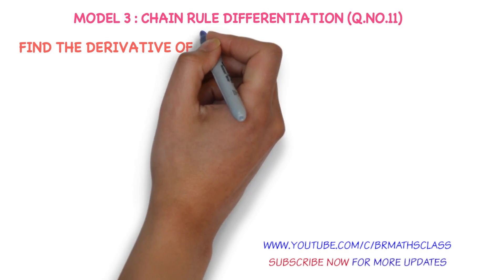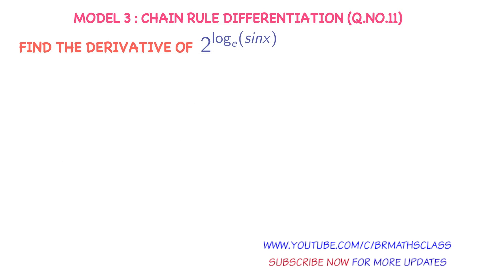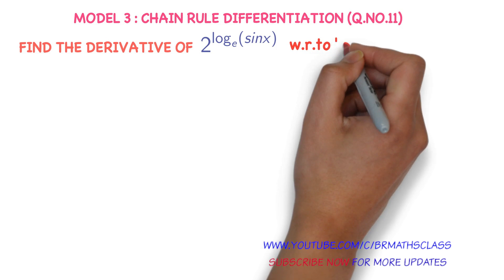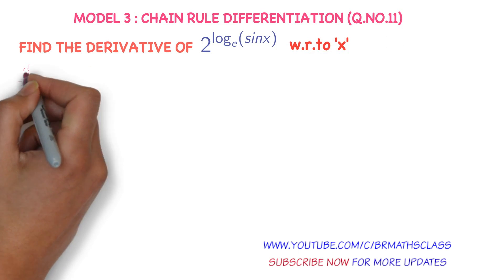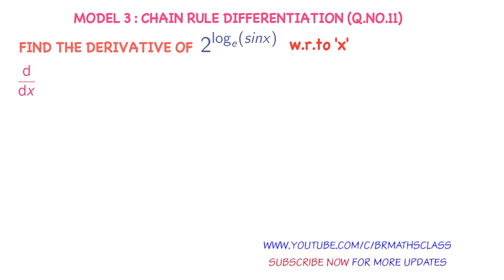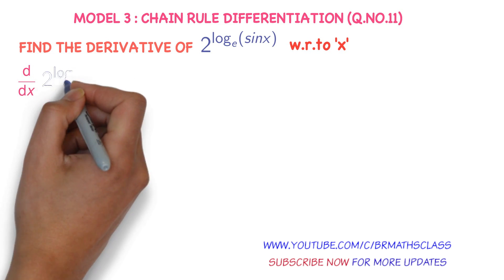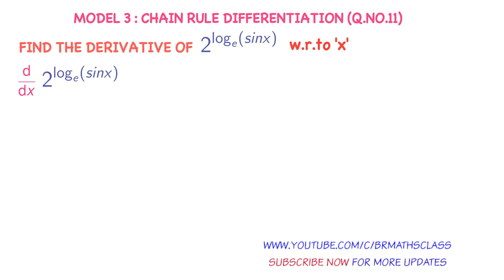Find the derivative of 2 power logarithm of sine x base e, with respect to x. We write it as d by dx. We need to calculate d by dx of 2 power logarithm of sine x base e. We don't have any direct formula for this derivative.